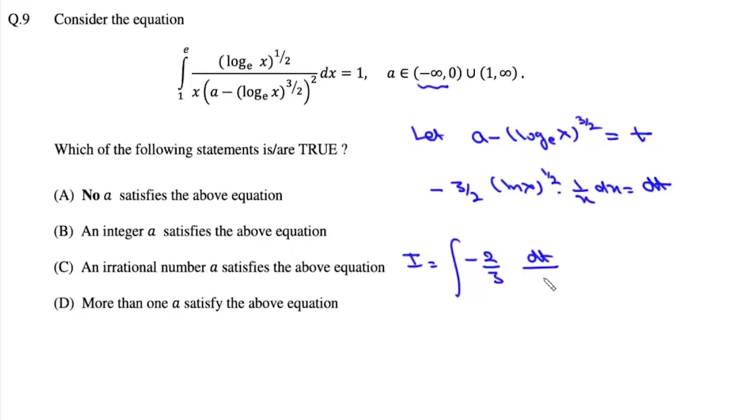And we have to find these limits. Now if we put x as one, log one is zero so lower limit is a, and we put x as e it will be a minus one.